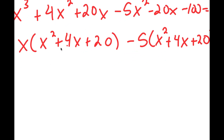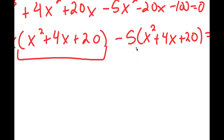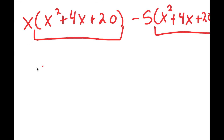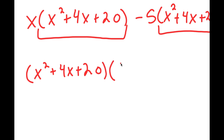Notice how both of these terms have x squared plus 4x plus 20 in them. So from here, if I factor out x squared plus 4x plus 20, I get x squared plus 4x plus 20 times x minus 5, is equal to 0.